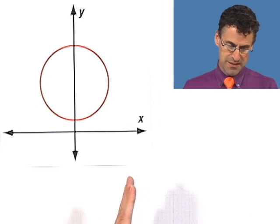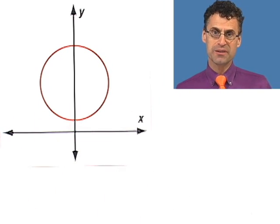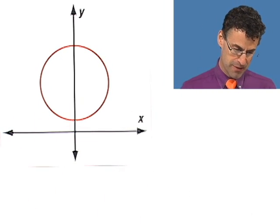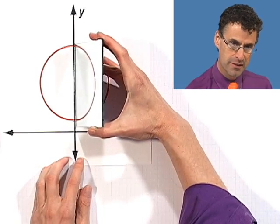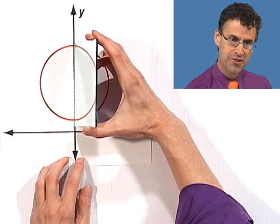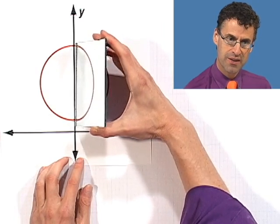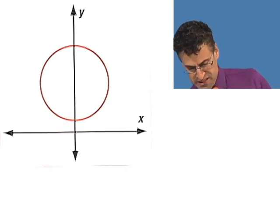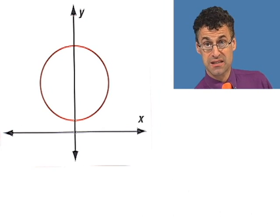What happens on the right-hand side of the y-axis is exactly what happens on the left. You can see that for yourself. Take a look at the left, and now I'm going to put a mirror here. Do you see how the mirror is really just showing you a reflection of that? We say this is symmetric around the y-axis.